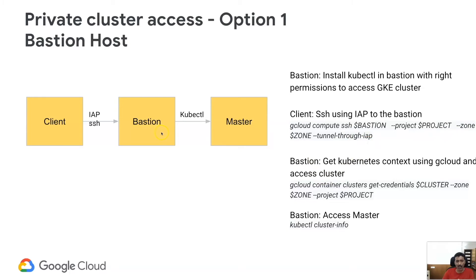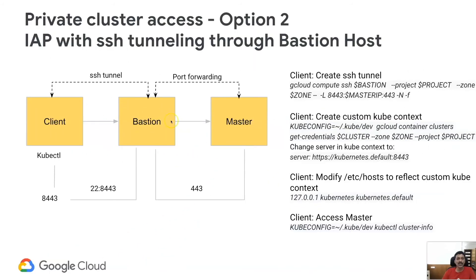Once you are able to reach the bastion, you can access your Kubernetes cluster. First, you get the context for your Kubernetes cluster, and then you can access the Kubernetes master. The second option is what we call IAP with SSH tunneling through the bastion host. In this scenario, we set up a tunnel to the bastion host and set up local forwarding to access the master.